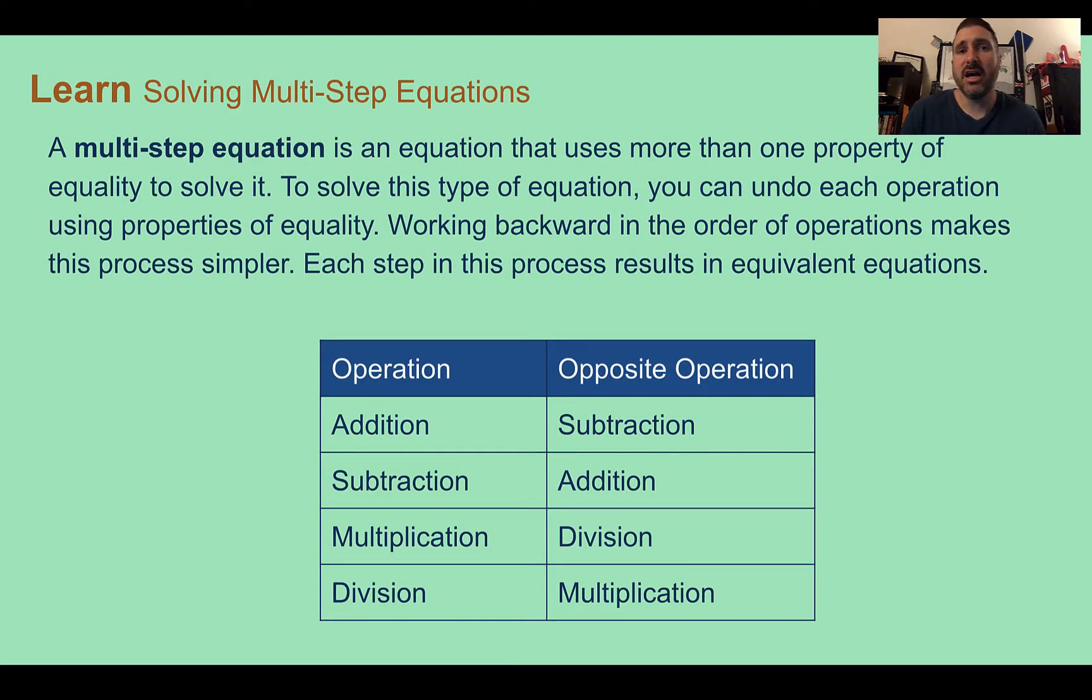We learned in the previous lesson about one-step equations, where we took one operation and had to undo it in order to solve for our variable. A multistep equation is an equation that uses more than one property of equality to solve it. To solve this type of equation, you can undo each operation using the properties of equality. Working backwards of order of operations makes this process simpler, and if we do it correctly, it results in equivalent expressions along the way.